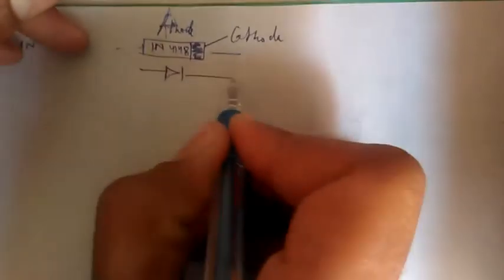Hello, today we are going to learn about the diode IN4148. This is written on the diode: IN4148. This is the anode side and this one is the cathode. This is the schematic symbol of the diode.